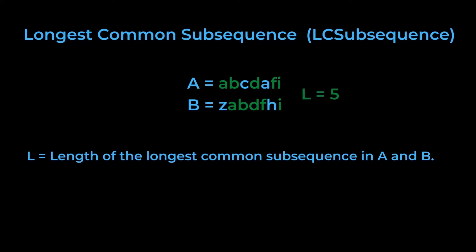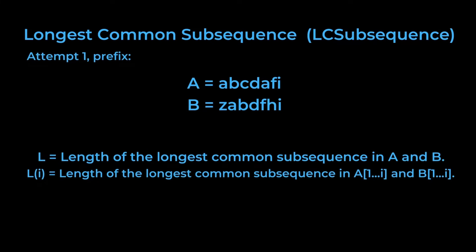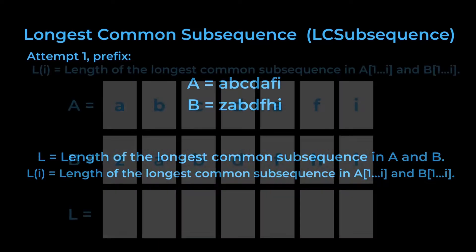We're mostly interested in the length of the longest common sequence, as the solution can be trivially extended to allow the subsequence itself to be found. So first, we're going to try to create a simple prefix of the problem. If L is the length of the longest common subsequence in a and b, then we'll let L(i) be the length of the longest common subsequence in a[1...i] and b[1...i], which means we only take the first i characters in the strings a and b. So let's try to work through an example with this and try to create a table and figure out the recurrence relation for this problem.